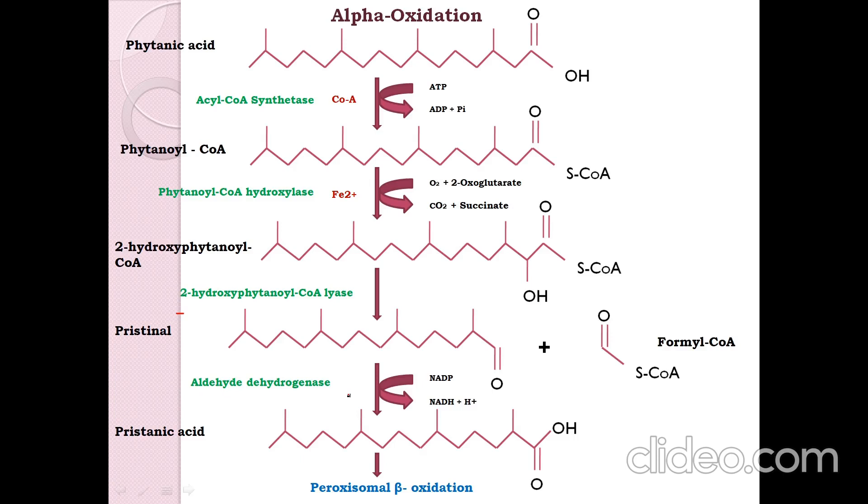The pristanic acid which is formed enters into peroxisomal beta oxidation. Finally acetyl CoA, propionyl CoA, and 4,8-dimethylnonanoyl CoA are formed.